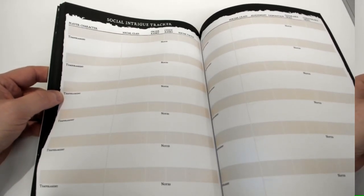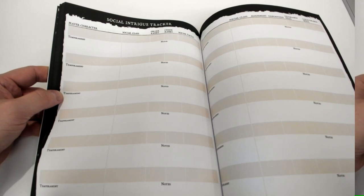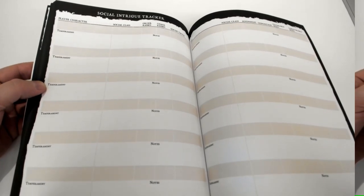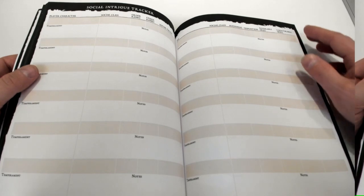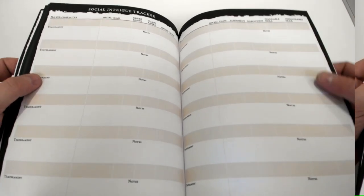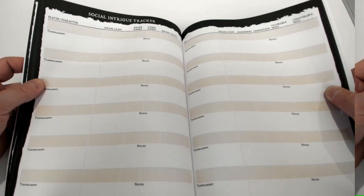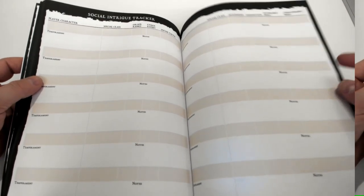Then we move on to the social intrigue tracker. We know that there are simple intrigues and complex intrigues in Zweihander. So here you can track player characters, you can track NPCs, you can track the current temperament, their social class, their alignments, the temperaments that are generated by the player characters for the game master to use as a role-playing tool. We have four of those.